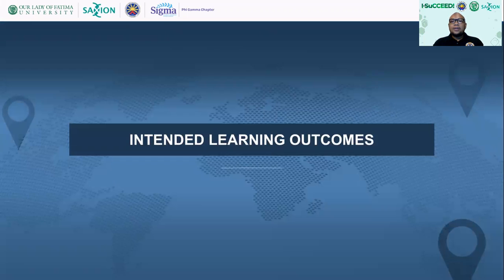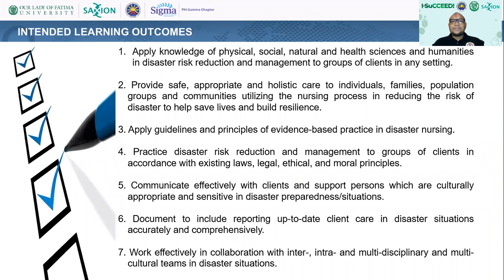The following are the intended learning outcomes for this course. First is to apply knowledge of physical, social, natural, and health sciences, and humanities in disaster risk reduction and management to groups of clients in any setting. Second is to provide safe, appropriate, and holistic care to individuals, families, population groups, and communities utilizing the nursing process in reducing the risk of disaster to help save lives and build resilience.